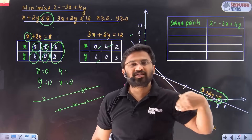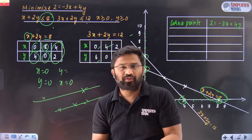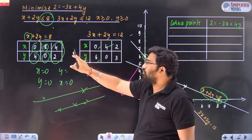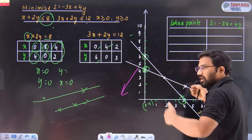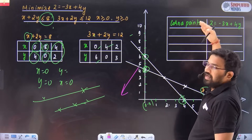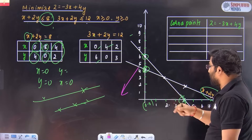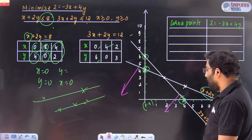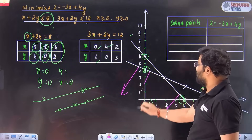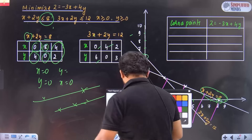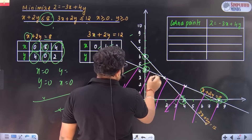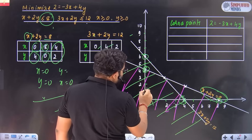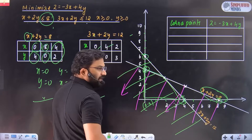For every constraint, substitute (0, 0): if true, shade towards the region; if false, shade away from the region. For x plus 2y equals 8, less than means towards this side, more than means towards that side. If you substitute (0, 0) and it's less than 12 — true — you shade towards this region. The common area where both shaded regions overlap is your feasible region.